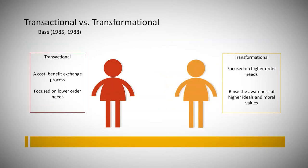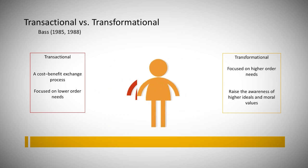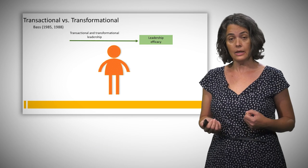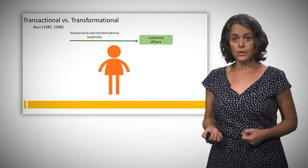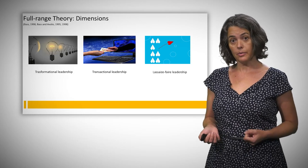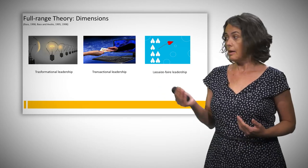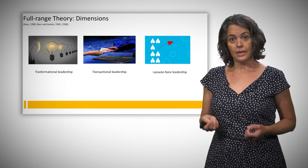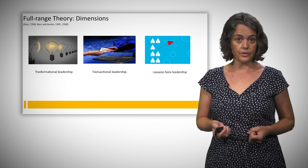Contrary to Burns, Bass considers that both dimensions could be applied simultaneously to foster leadership efficacy. Thus, the theory considers both transformational and transactional leadership as components of effective leadership. Bass also includes a third dimension, laissez-faire leadership, which indicates an absence of leadership.